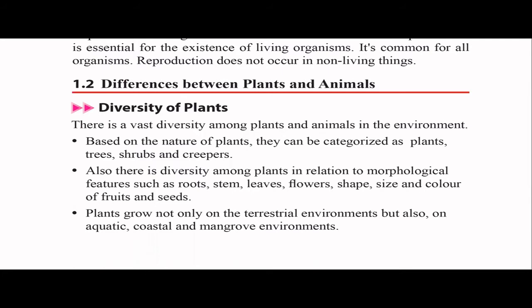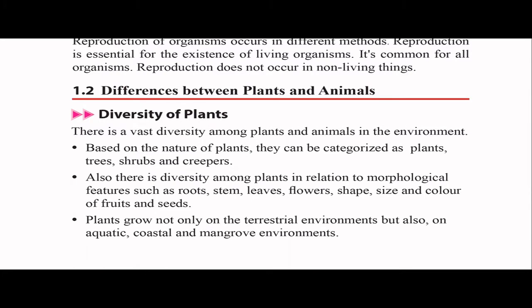In the last video, we discussed that the environment can be divided into two main components: living things and non-living things. When it comes to living things, we call them organisms, and organisms can be divided into three groups: animals, plants, and microorganisms. In this part, we are basically discussing the differences between plants and animals.